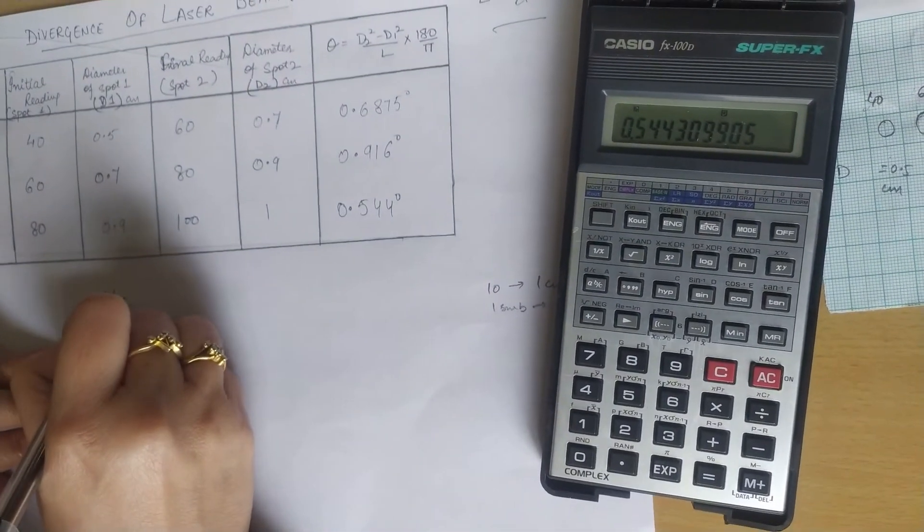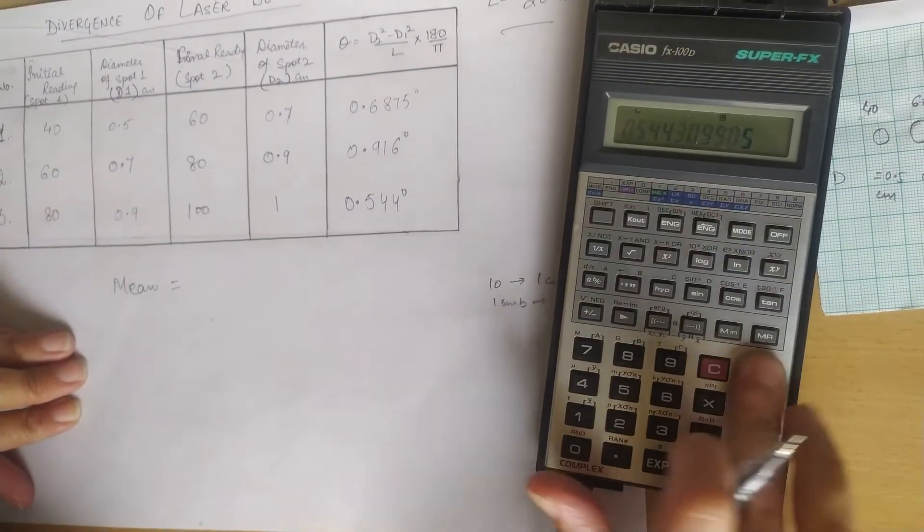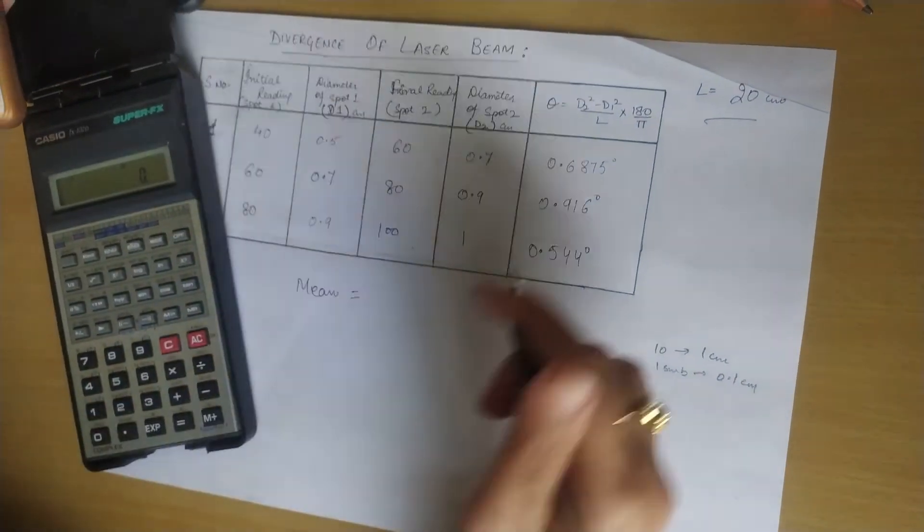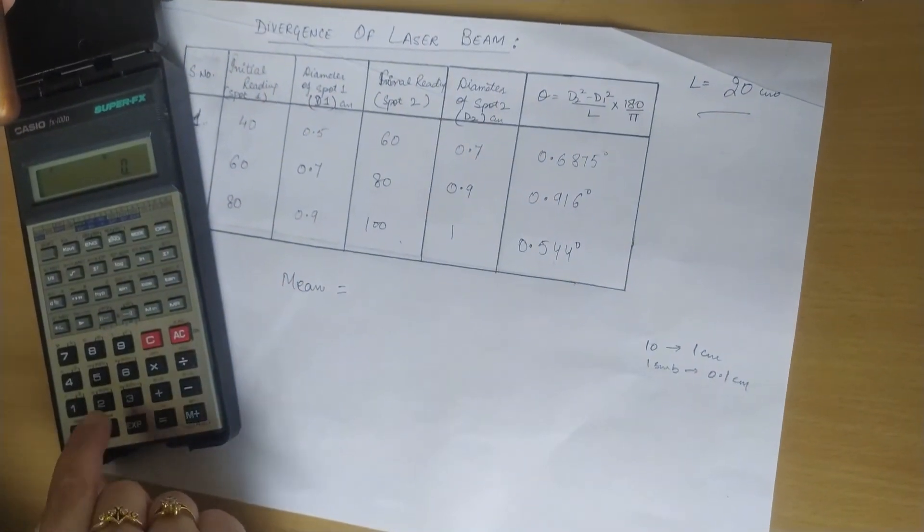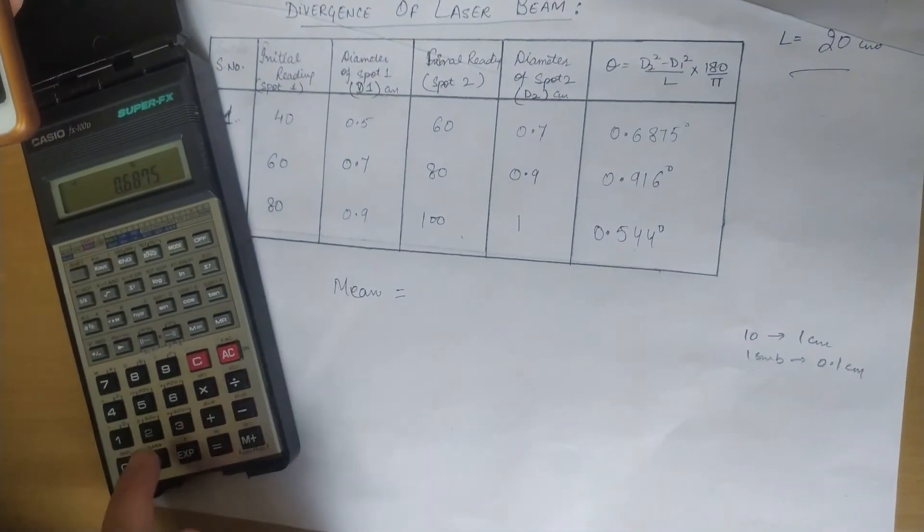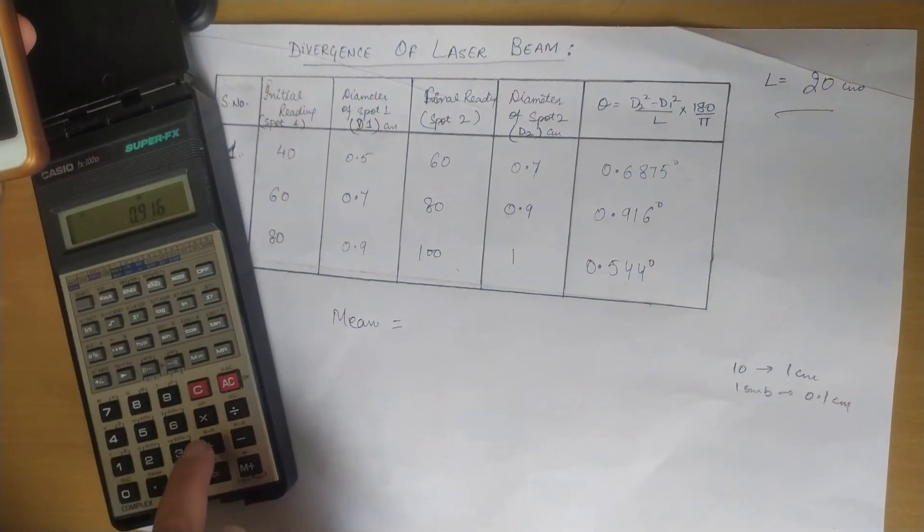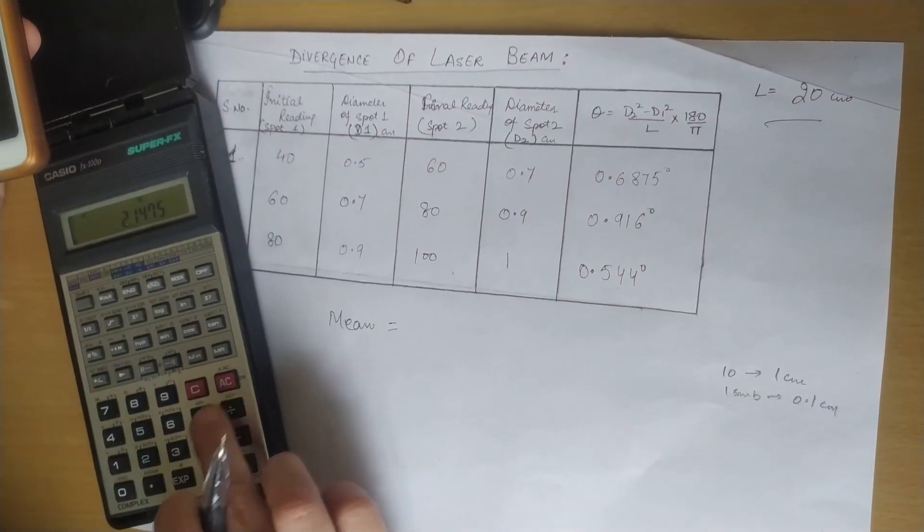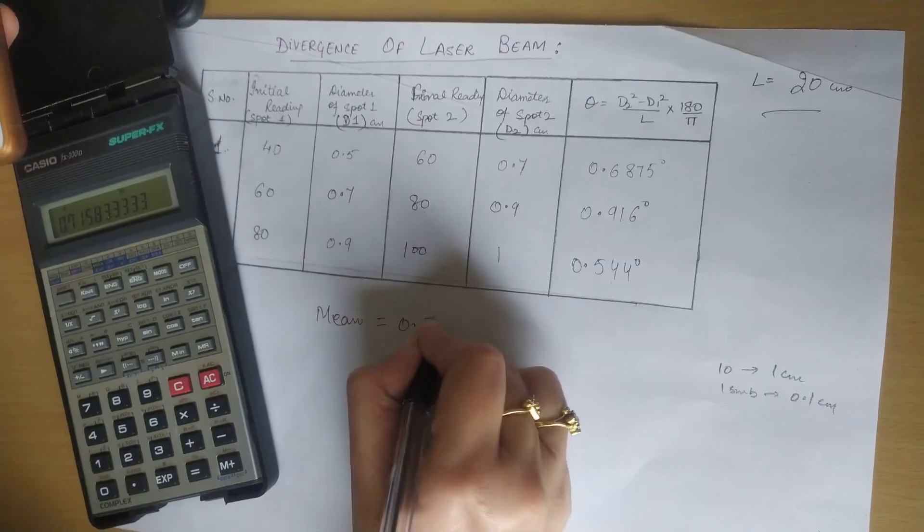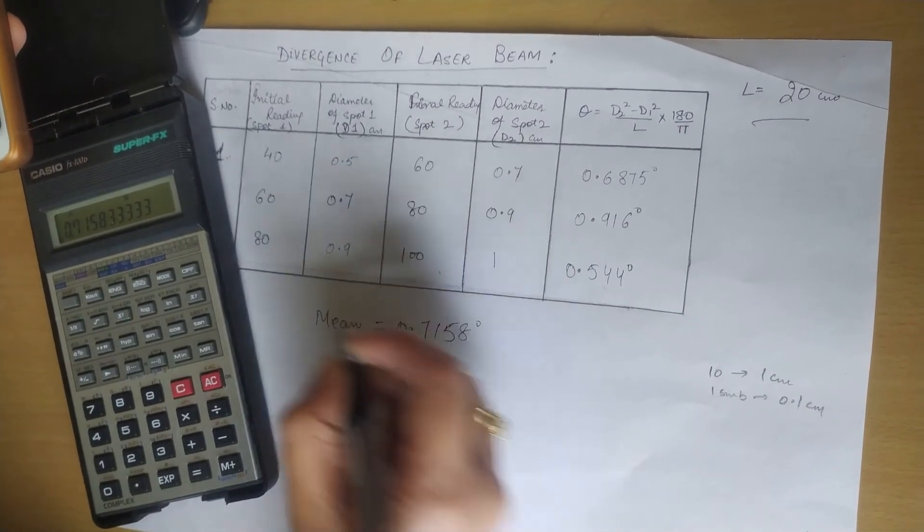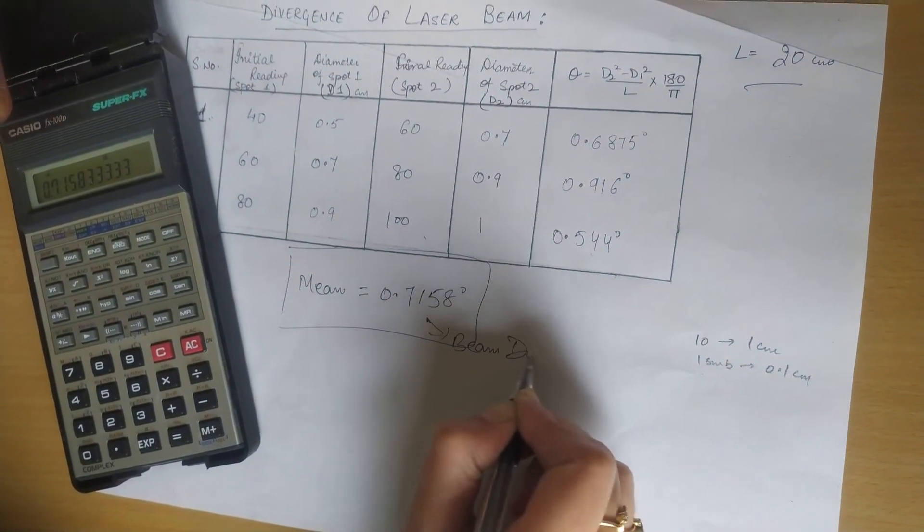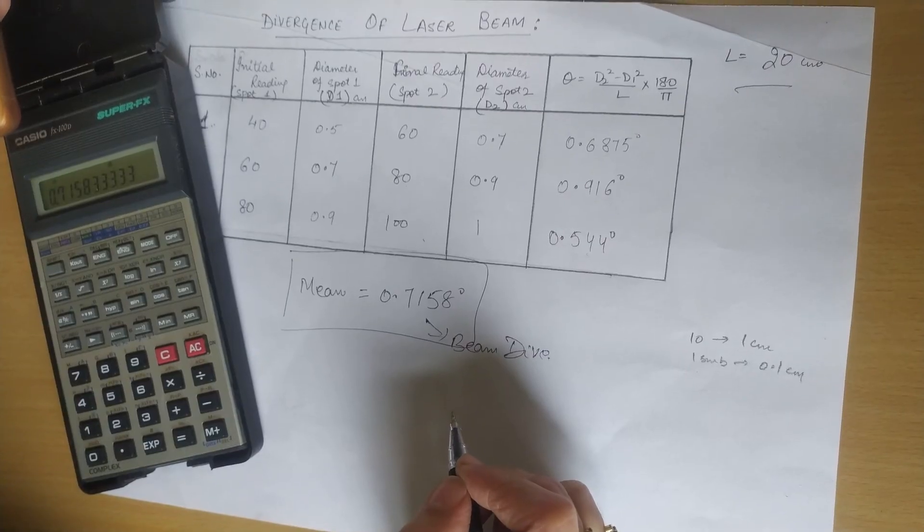To find the mean value or average value of beam divergence, I add all three readings: 0.6875 + 0.916 + 0.544, divided by 3. It comes out to be 0.7158 degrees. So this is the beam divergence. Thank you and stay tuned for more such experiments.